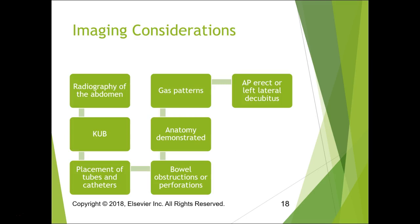For imaging of the abdomen, we usually start with a KUB — kidneys, ureter, bladder. We look for placement of tubes and catheters, obstructions or perforations, and gas patterns — is it over on one side or diffuse? Everything is a similar shade of gray, so we adjust contrast, kVp, and mAs to differentiate structures. We can do it upright or in a left lateral decubitus.